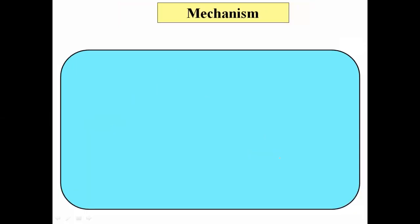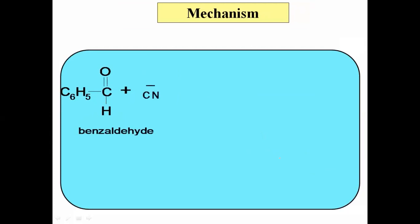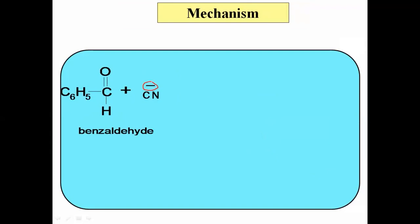Let us see the mechanism of this reaction. In the first step, one molecule of benzaldehyde participates. We are using alcoholic KCN, so we are using CN⁻. That CN⁻ acts as a nucleophile. CN⁻ from KCN acts as a nucleophile and easily attacks on the carbonyl carbon of benzaldehyde. There is formation of a new bond between carbon and the cyano group.